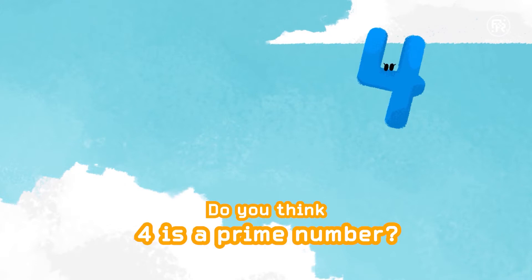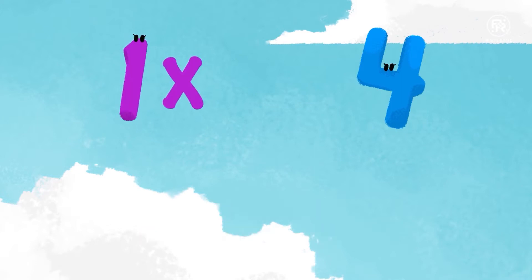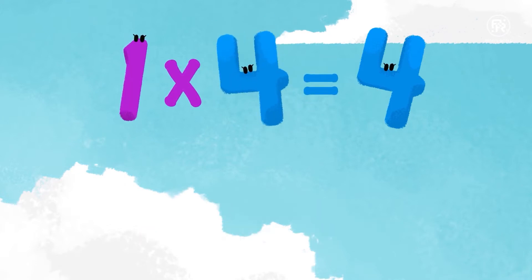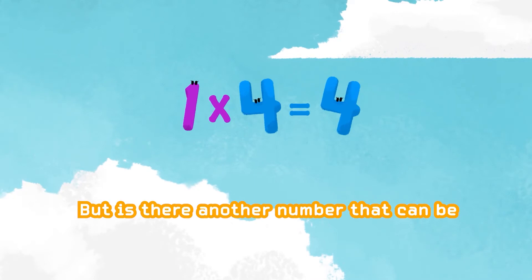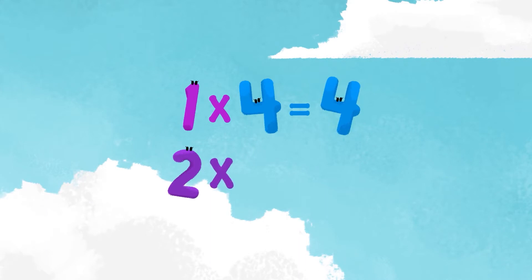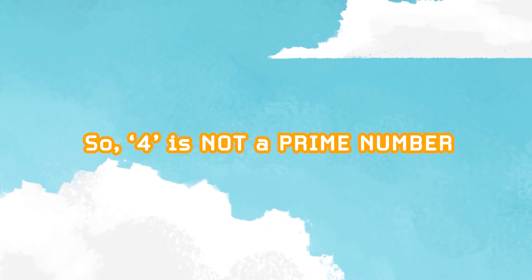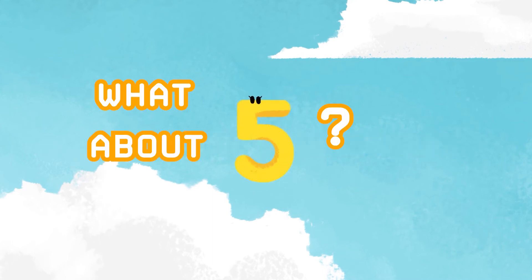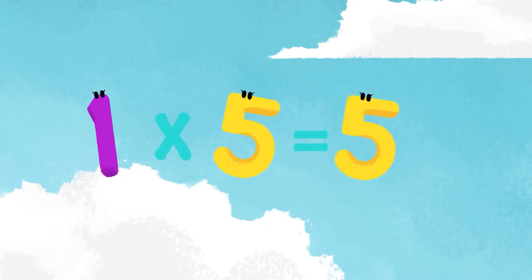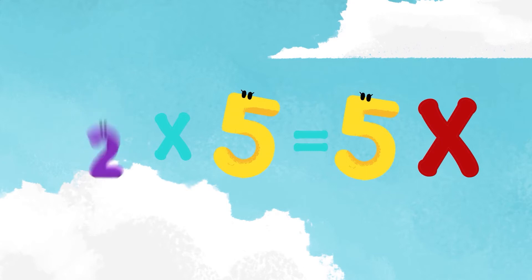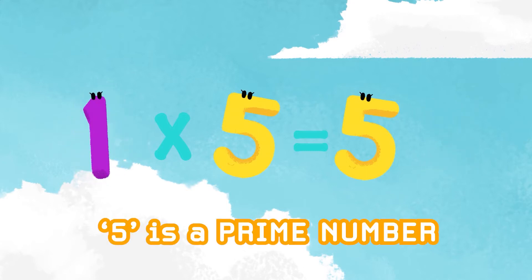Let's take four. Do you think four is a prime number? One times four is four. But is there another number that can be multiplied to get four? Two. Two times two is four. Very good. And so four is not a prime number. What about five? No numbers besides five and one can be multiplied to get five. So yes, five is a prime number.